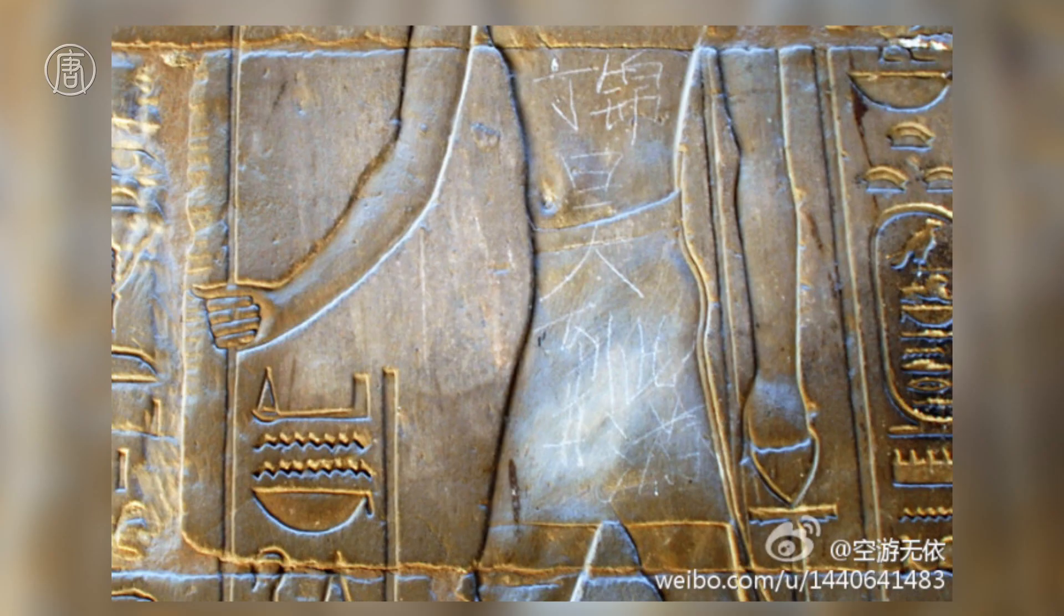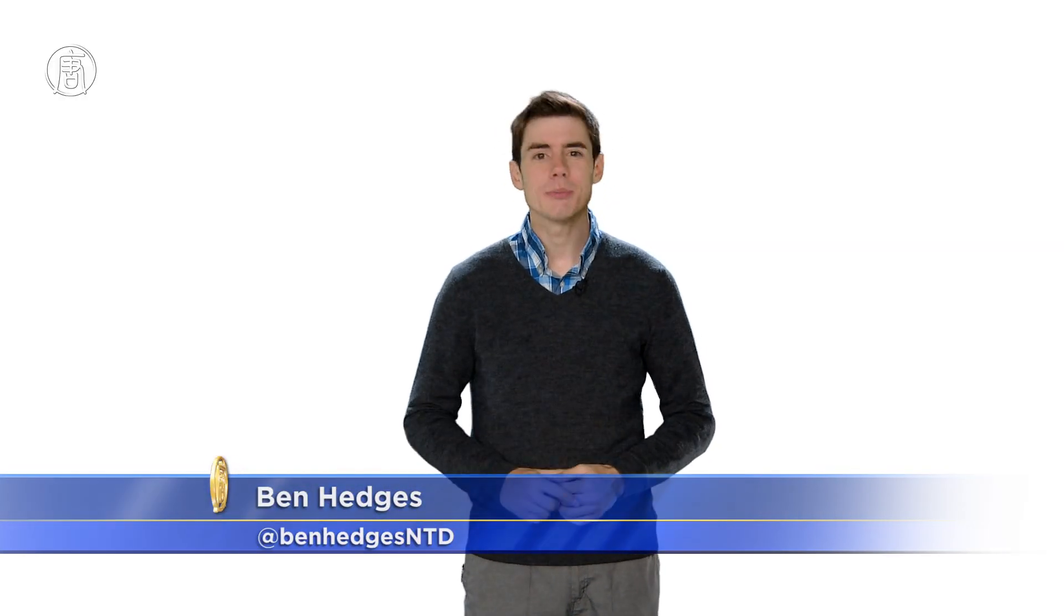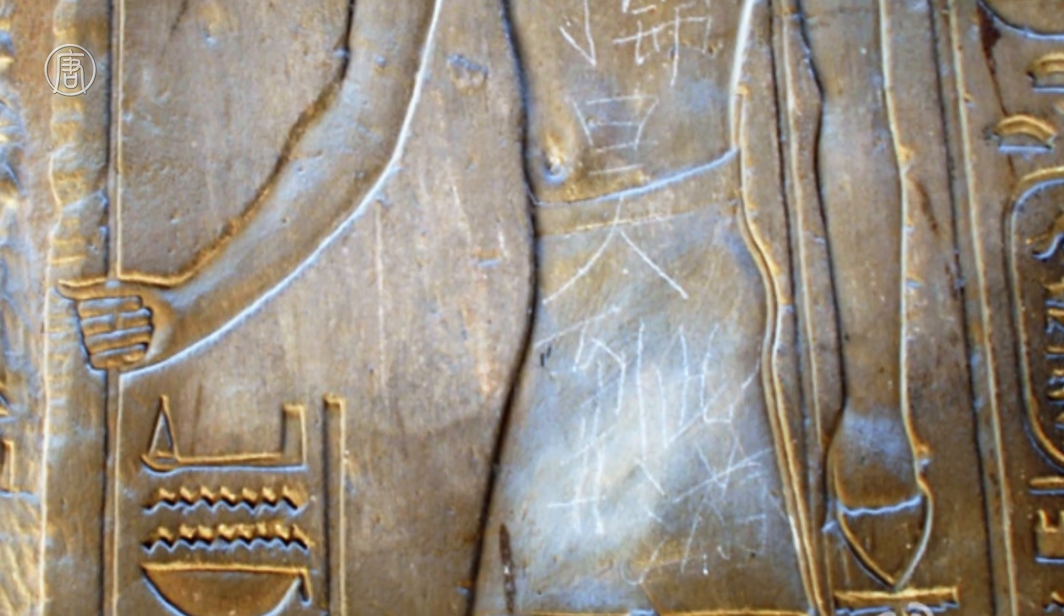On May 24th, this picture exploded onto the Chinese internet. What you are seeing is the wall of an ancient Egyptian temple in Luxor. But wait, that doesn't look like ancient Egyptian writing to me. It's actually several Chinese characters etched onto the wall.